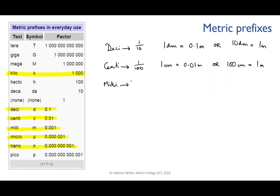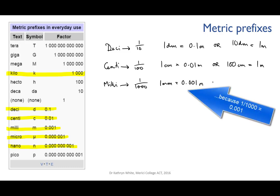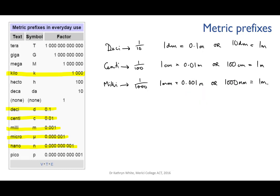Milli means one one-thousandth. One millimetre is equivalent to 0.001 metres. One times ten to the minus three metres. Or we can say that there are a thousand millimetres in a metre.